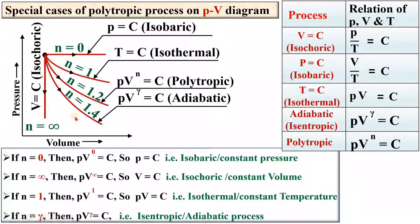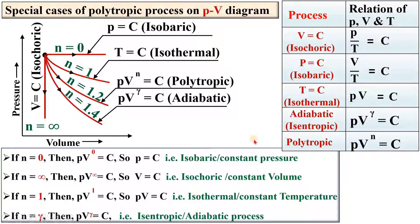To summarize: the polytropic process is the general case. When n equals 0, it is the isobaric process. When n equals 1, it is the isothermal process. When n equals 1.4, it is the adiabatic process. When n equals infinite, it is the isochoric process. Please write your valuable feedback in the comment box to motivate me to make more videos. Thanks, dear friends, for watching this video.